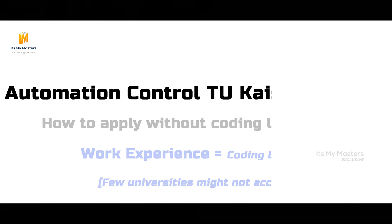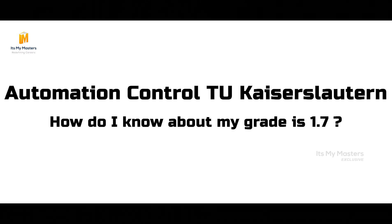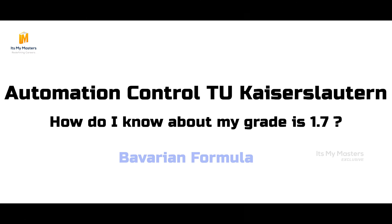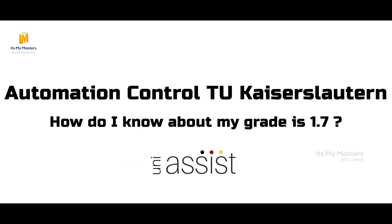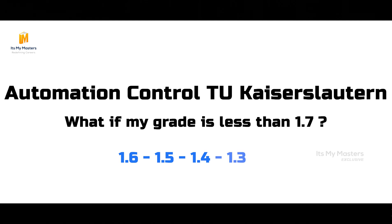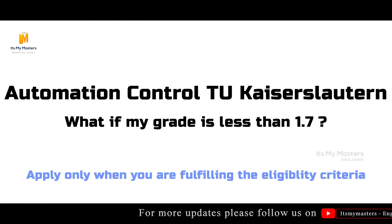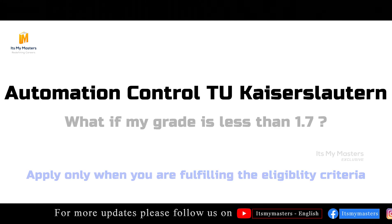A minimum grade of 1.7 is required to apply for this course. If you don't have a 1.7 grade, the 60 euros application fee will be wasted. To check your grade, you can use the Bavarian formula or get your grades converted to the German scale through applications like Unisist. Keep in mind that less than 1.7 means 1.6, 1.4, or 1.3 — those are acceptable. Grades of 1.9 or 1.8 are above 1.7 and do not meet the criteria, so it is not suitable to apply.